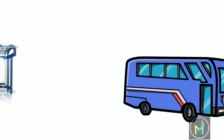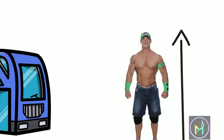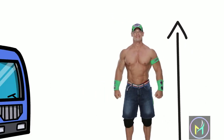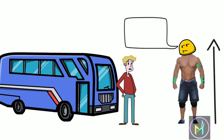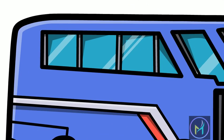At the next stop, however, a big hulk of a guy got on. Six feet eight, built like a wrestler, arms hanging down to the ground. He glared at the driver and said, Big John doesn't need to pay, and sat down at the back.